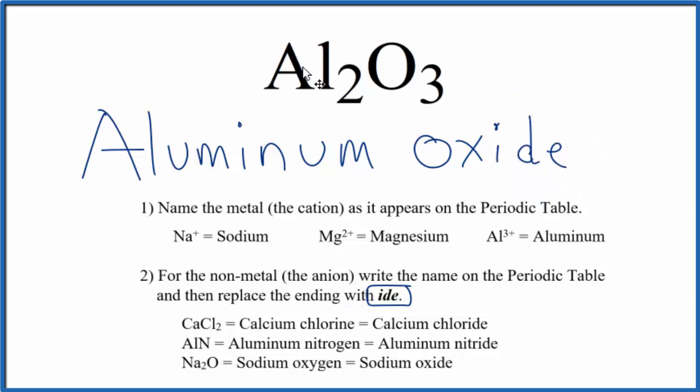And the name for Al₂O₃ is aluminum oxide. Sometimes you'll see this with a 3 here in the middle, not often, but sometimes. The reason that's done is trying to distinguish between Al₂O₃ and another aluminum oxide, AlO. But the accepted name for this is aluminum oxide.